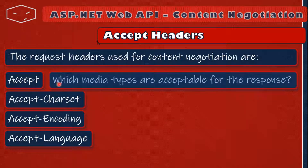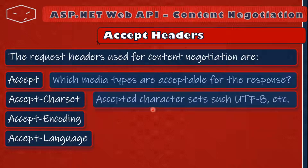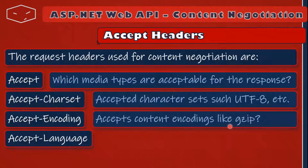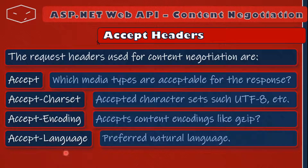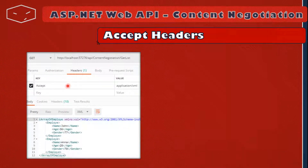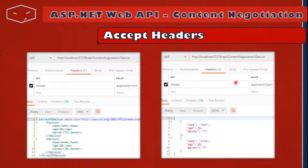The Accept header tells us which media types are acceptable for the response — for example, application/JSON or application/XML. The Accept-Charset says what character sets the client understands, such as UTF-8 or UTF-16. Accept-Encoding covers things like GZip. And Accept-Language is the preferred natural language, such as Italian, French, or German. Here are examples: requesting with Accept: application/XML returns XML, and with application/JSON returns JSON.